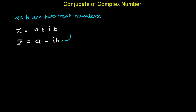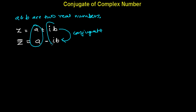So z-bar is the conjugate of z. Conjugate of a complex number simply means a complex number having the same real part, same imaginary part, but differing in sign — the imaginary part differs in sign. Then that is called the conjugate of the complex number.